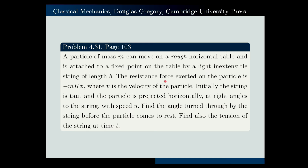The resistance force exerted on the particle is minus m·k·v, where v is the velocity of the particle. Initially, the string is taut and the particle is projected horizontally at right angles to the string with speed u. Find the angle turned through by the string before the particle comes to rest. Find also the tension of the string at time t.